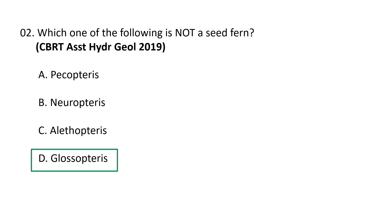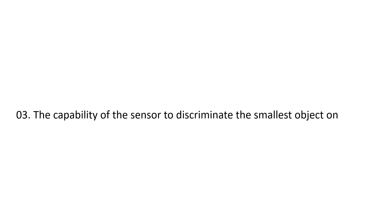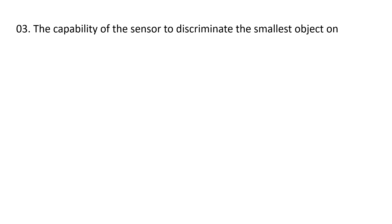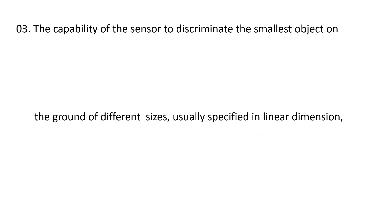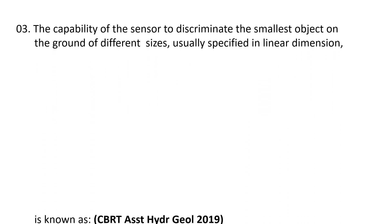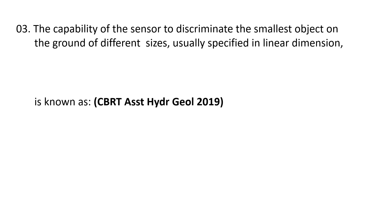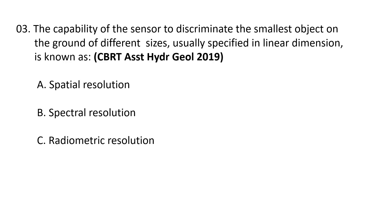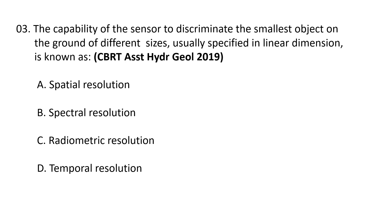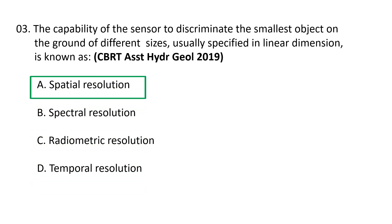Next question: the capability of a sensor to discriminate the smallest object on the ground of different sizes, usually specified in linear dimension, is known as: A) Spatial resolution, B) Spectral resolution, C) Radiometric resolution, and D) Temporal resolution. The correct answer is spatial resolution.